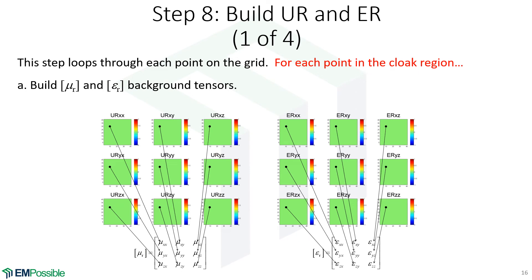At this point, we set up a big double loop to go through our array one point at a time to calculate the permeability and permittivity at each point. Step one of this: we build the background tensors. Whatever point we are in our loop, we go into all 18 arrays and grab the value from each to build our two tensors. These tensors are just nine numbers each coming from whatever point we are in the array. If we started with permeability and permittivity being equal, we only need to calculate one; if they started with different background values, we have to do both.